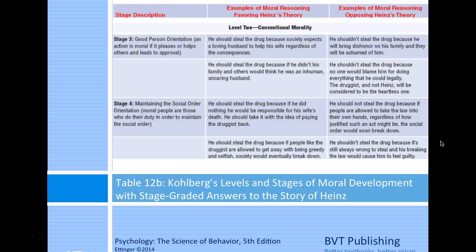Level two, conventional morality. Stage three is good person orientation—an action is moral if it pleases or helps others and leads to approval. In favor of Heinz: he should steal the drug because society expects a loving husband to help his wife regardless of consequences; or if he didn't steal it, his family and others would think he was an inhuman, uncaring husband. Clearly, both are motivated by seeking approval.